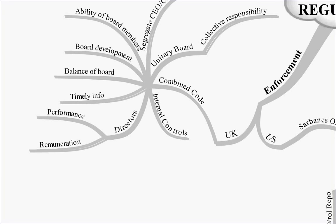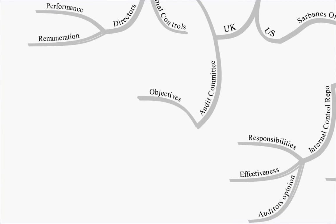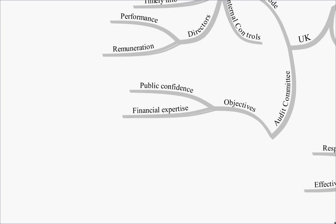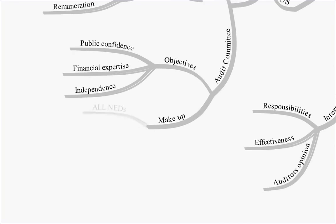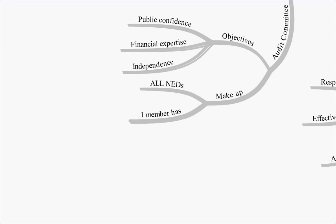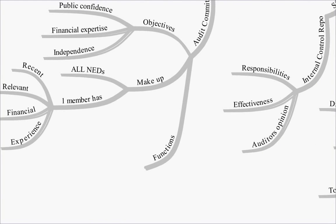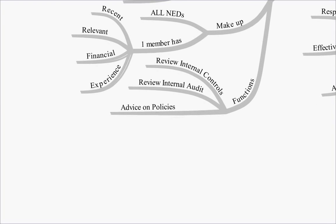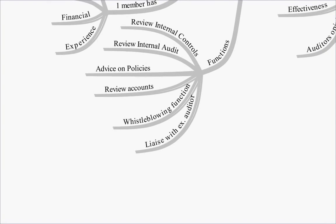The audit committee is a key point in the Combined Code. If you're unsure on any points, go back to your notes to make sure you understand them. The objectives of the audit committee are to increase public confidence, provide financial expertise to the board, and provide independence for the external auditor, who will be able to report to the audit committee. The audit committee must be made up entirely of non-executive directors, and at least one member must have recent relevant financial experience. Functions include: reviewing internal controls; reviewing internal audit and its reports; advising on financial policies and reviewing the accounts; providing a whistle-blowing function; and liaising with the external auditor.